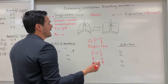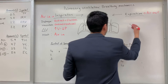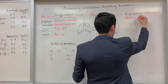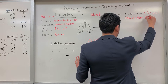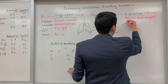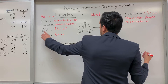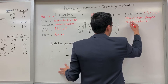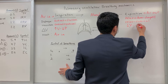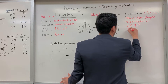During expiration the diaphragm is going to relax and go back into its dome-shaped structure. The intercostals — the external intercostals — are also going to relax. Because we are decreasing the volume there is going to be an increase in the pressure, and as a result the air goes out.